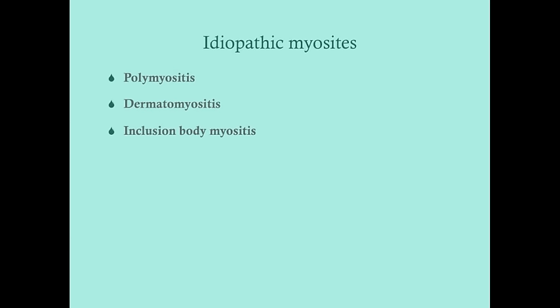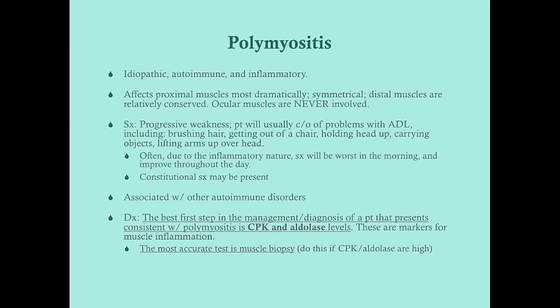Polymyositis is idiopathic, autoimmune, and inflammatory. We have a generally good idea that it's autoimmune in origin, and it's inflammatory, meaning white blood cells are recruited to the muscle causing inflammatory-style pain. It affects the proximal muscles much more dramatically than the distal muscles - so this affects the thighs, upper arms, and hips rather than the fingers, hands, and feet.